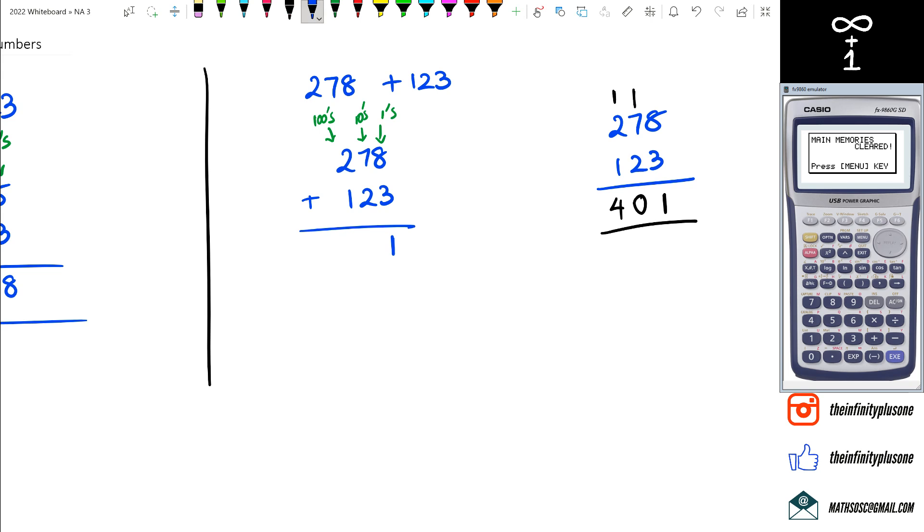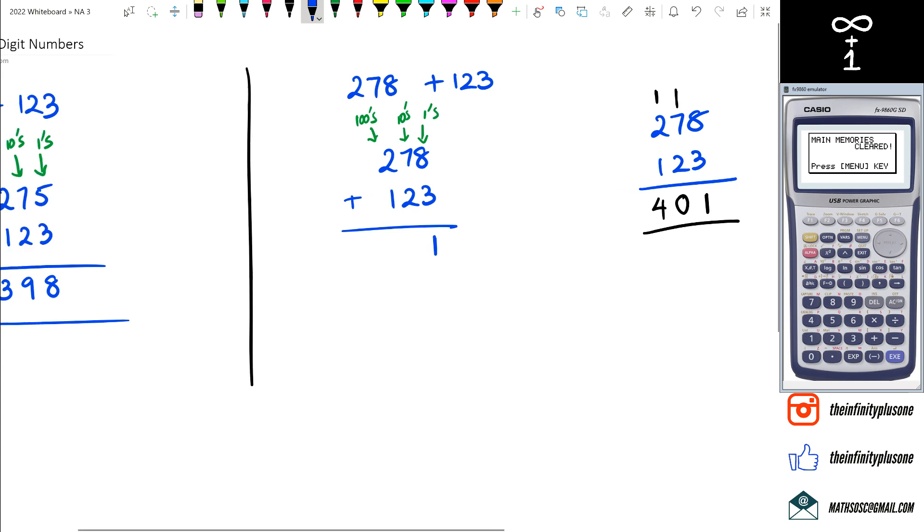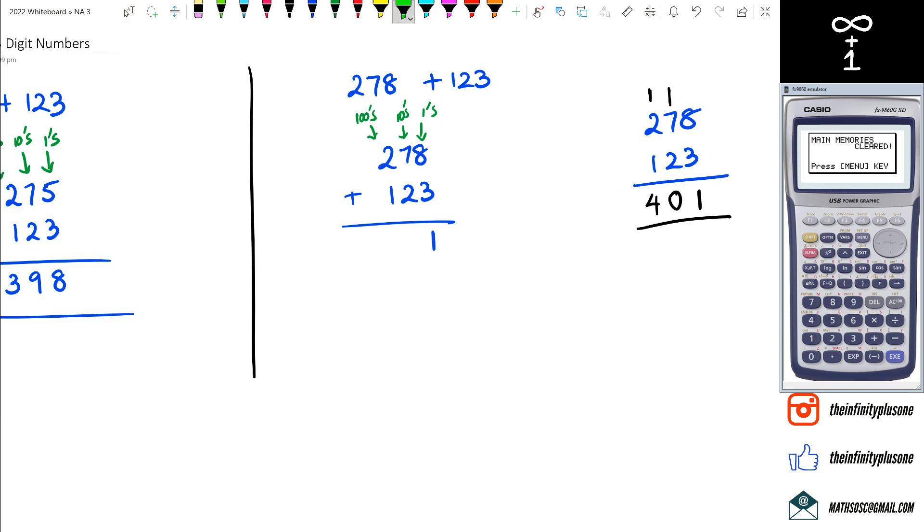Anyway let's go back to here, and what I'm going to do is I'm going to split these numbers up and I'm going to show you guys why we do that adding that one on top—I'm talking about these ones right here. So if you think about it when we take 278 we can actually write this as 200 plus 70 plus 8.